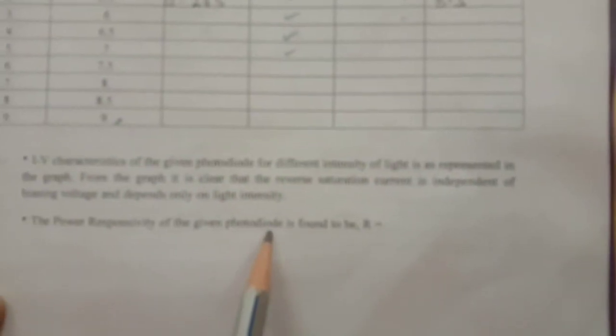Finally, you must report your result as: the IV characteristics of a given photodiode for different intensities of light is as represented in the graph. And from the graph you have to write it is clear that reverse saturation current is independent of the biasing voltage.